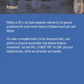Our patient today is Willie, a 55-year-old male carpenter referred by his general practitioner for a two-month history of bilateral hand pain and fatigue. You take a complete history and perform a detailed physical examination. Pertinent positives include bilateral involvement of multiple MCP joints, proximal interphalangeal joints, as well as his first carpal metacarpal joint, with his right hand involvement greater than his left, and bilateral knee involvement — all of these joints are tender and swollen.